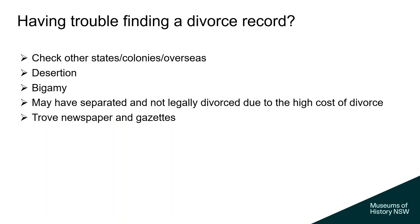If you're having trouble finding a divorce record and believe a divorce took place, it may be worthwhile checking other states and overseas. Perhaps one of the parties deserted or committed bigamy — simply disappeared or went on to marry someone else without going through the legal divorce procedure. The cost of divorce was extremely expensive and not possible for many couples, and there was also the stigma associated with divorce during that time, so couples may have chosen to separate without going through the whole process. It's also worthwhile to check newspaper and gazette articles on Trove, as there is often a wealth of information to be found there.